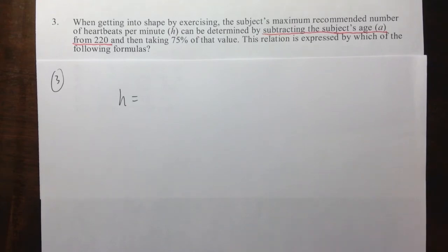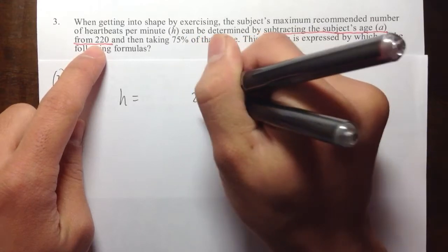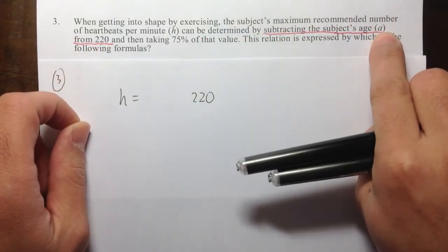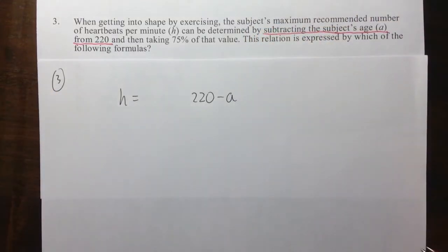So you get 190. So we're going to put the 220 first. And I'm going to minus whatever the age is. Minus A.